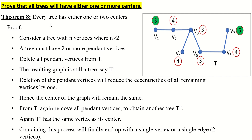What is the center? The vertex with the minimum eccentricity is the center. The center of the tree is the vertex with minimum eccentricity.